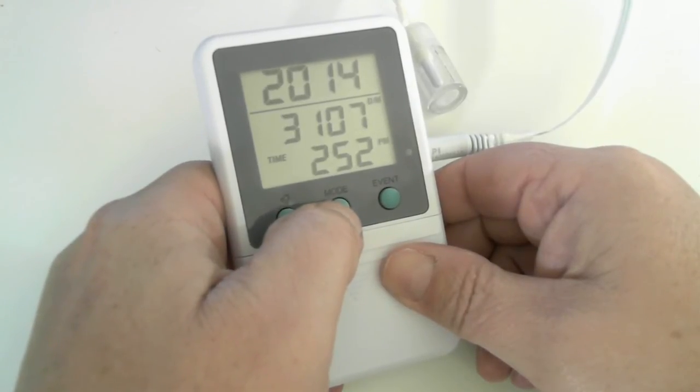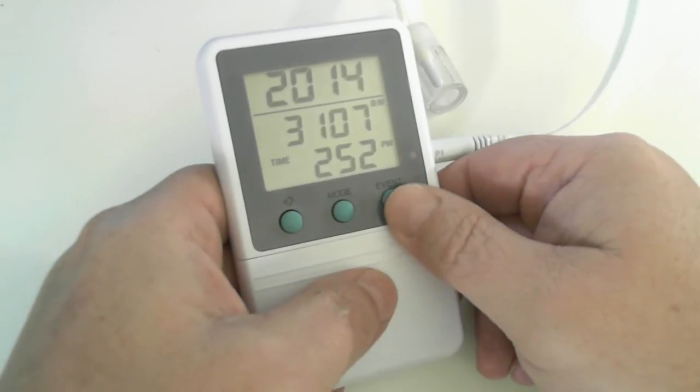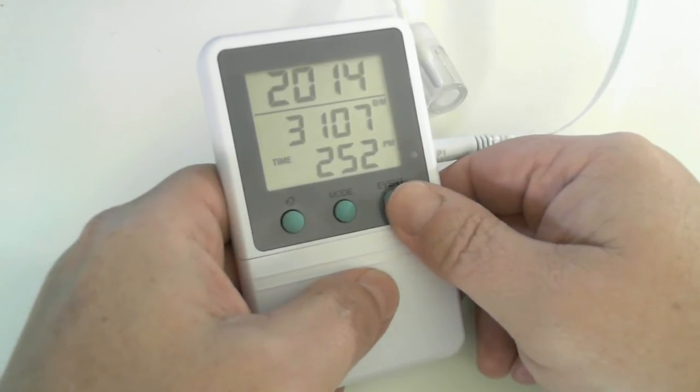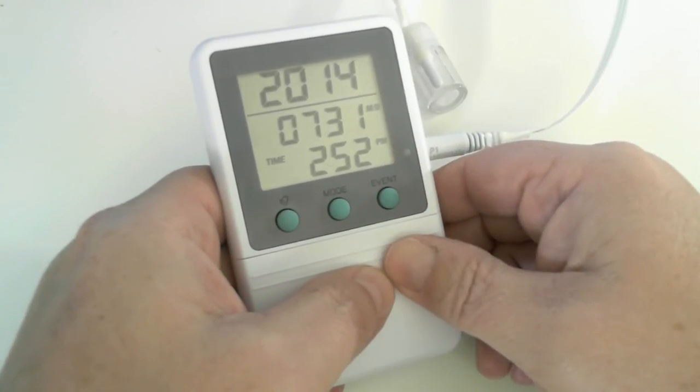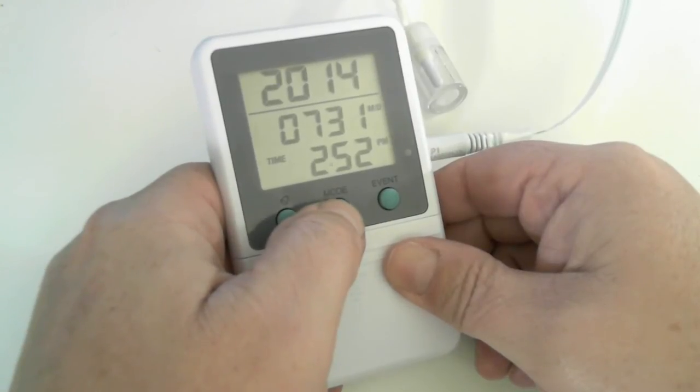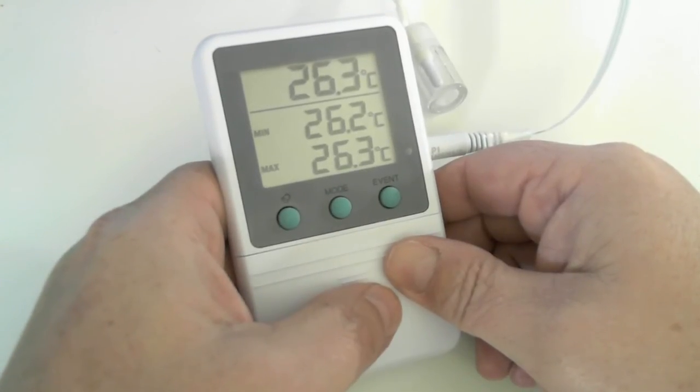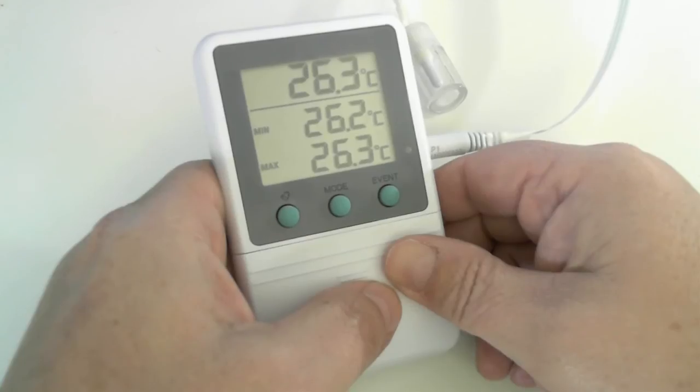And hit mode. And, you know, let's change day, month to month, day. I like that setting better. And hit mode again. Now we're back to the main current temperature, minimum recorded temperature, maximum recorded temperature.